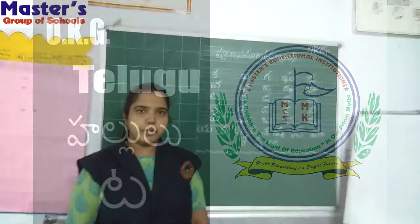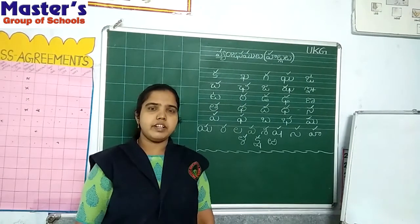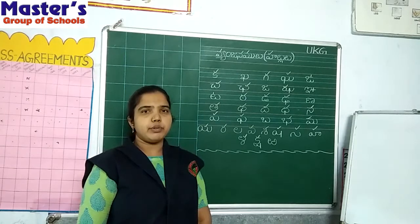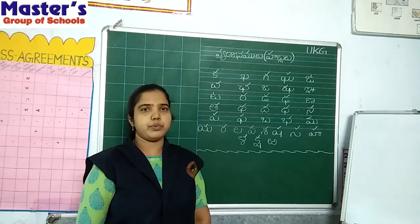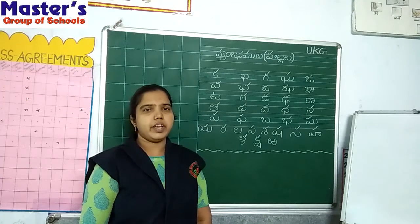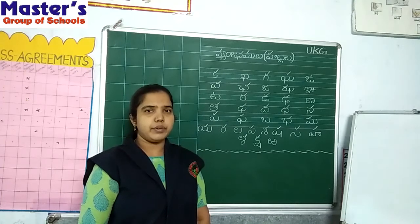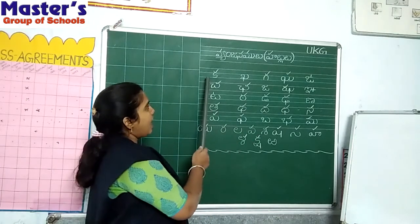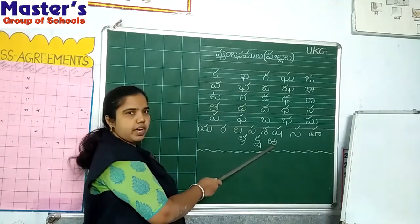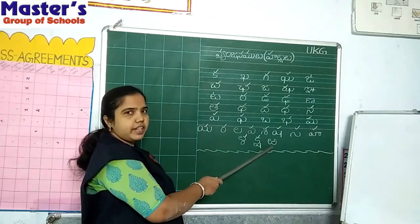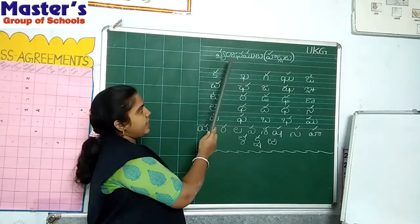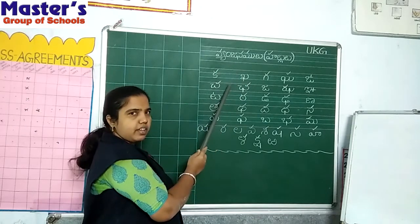Good morning children. Today we are going to learn Telugu Vyanjanamulu, or Hallulu. Look here — the letters from Ka to Ba, combined together, are called Hallulu, or Vyanjanamulu.